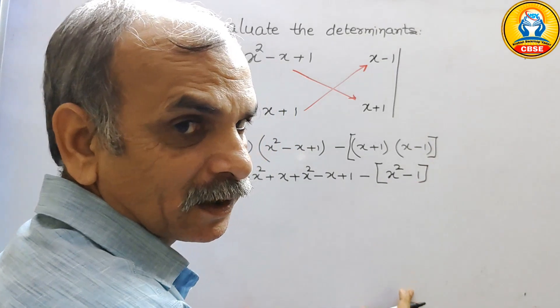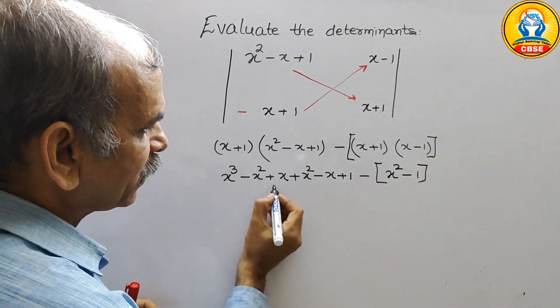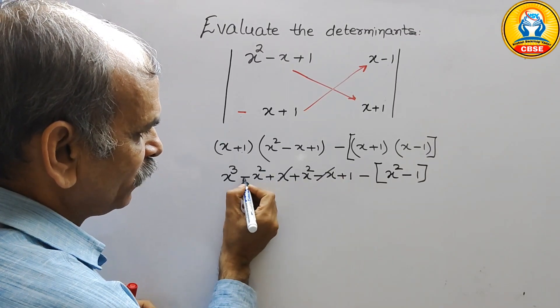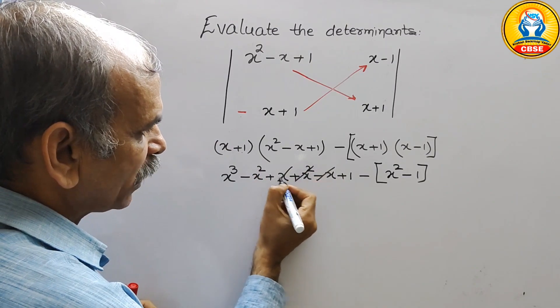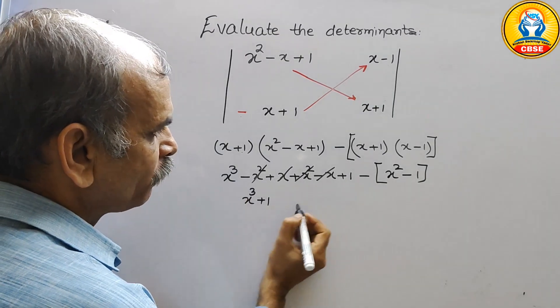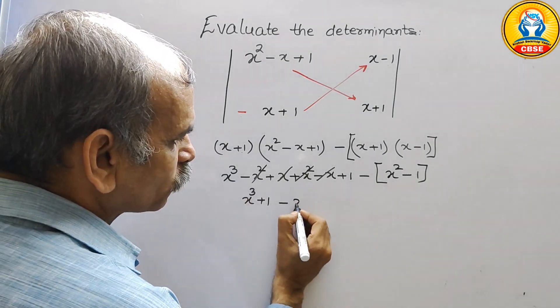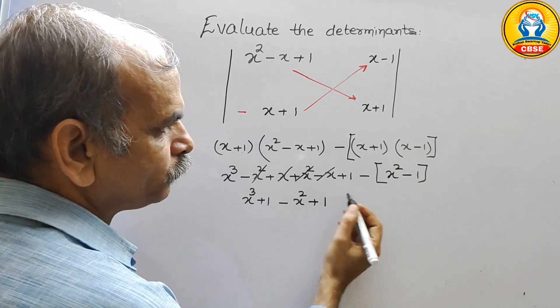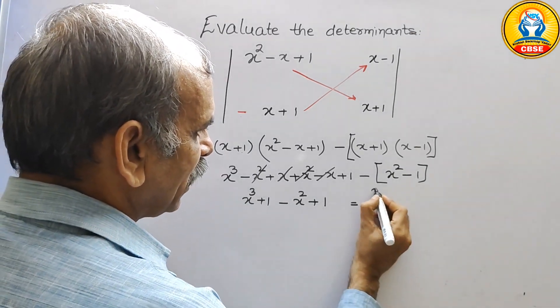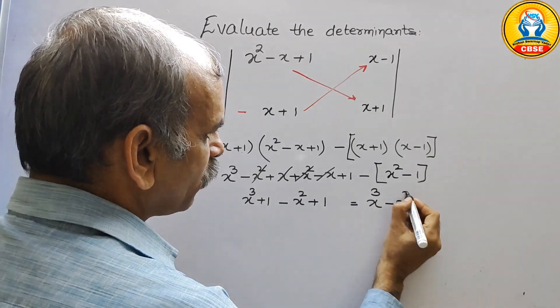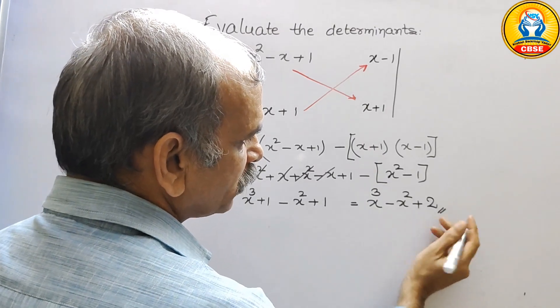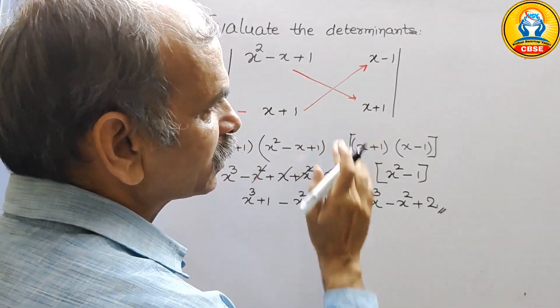Now change the sign here. And here also we can see plus x is there, minus x is there. It will get cancelled. Minus x square plus x square get cancelled. So now here we will get x cube plus 1 minus x square and plus 1. That is equal to, we can say now our answer is x cube minus x square, 1 plus 1 is 2. So this is our answer for this determinant.